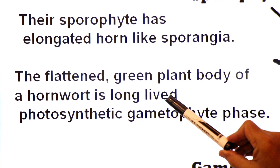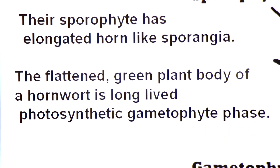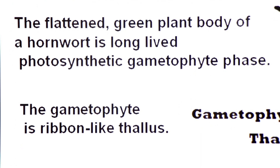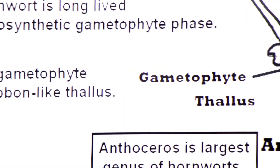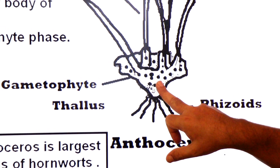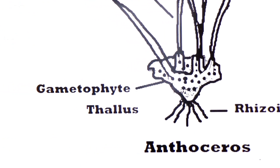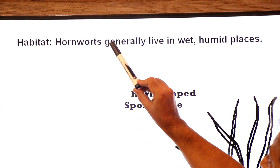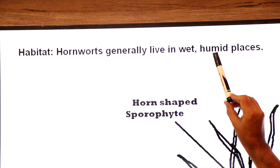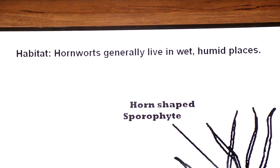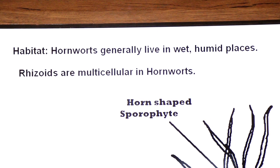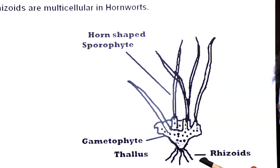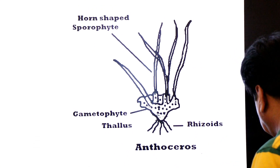The gametophyte is ribbon-like thallus — a body not divided into root, stem, and leaves. Regarding habitat, hornworts generally live in wet, humid places. Rhizoids in this class are also multicellular.